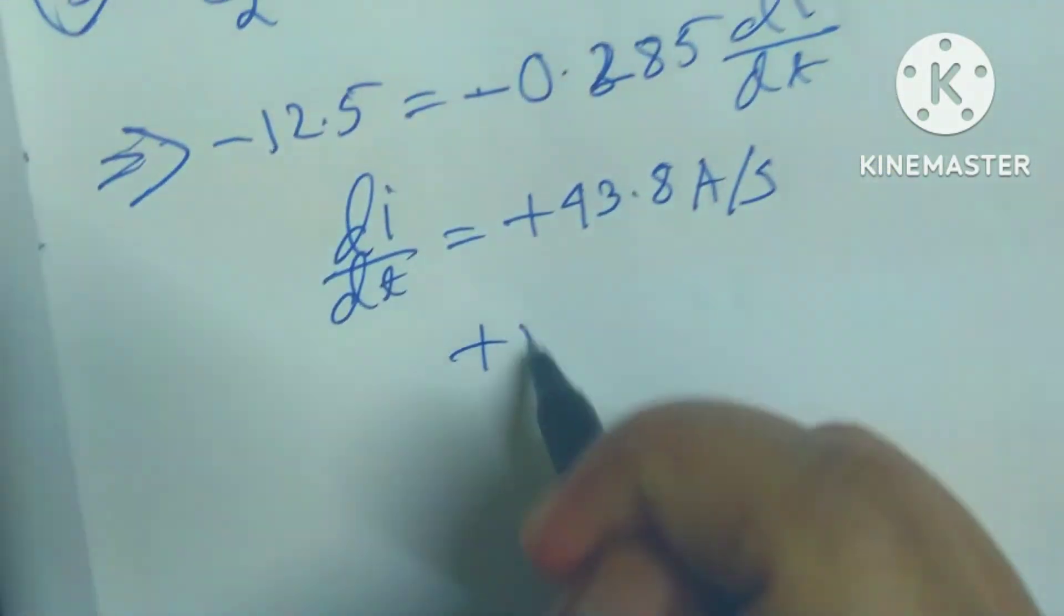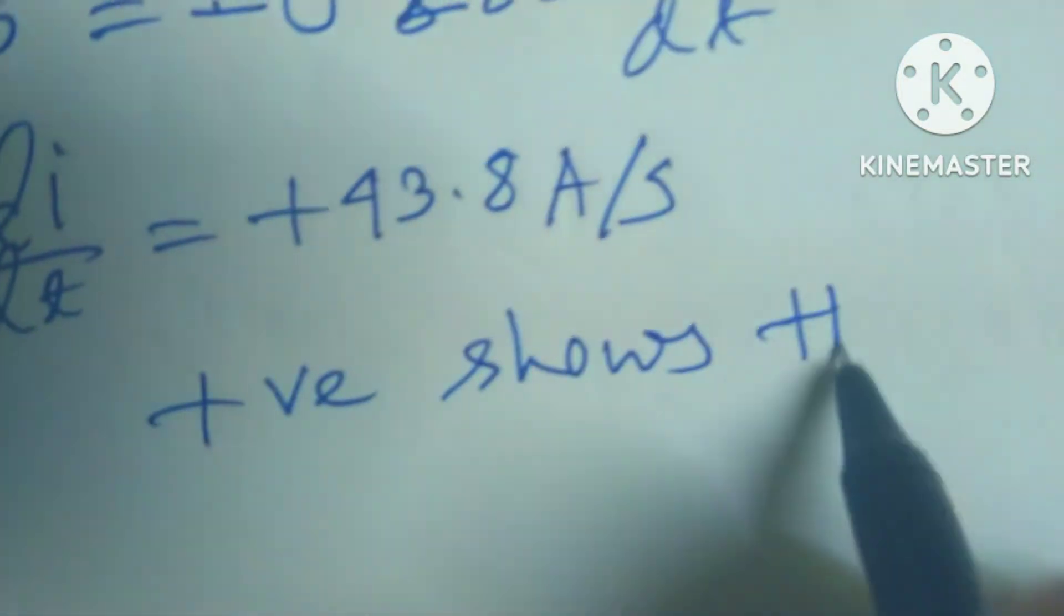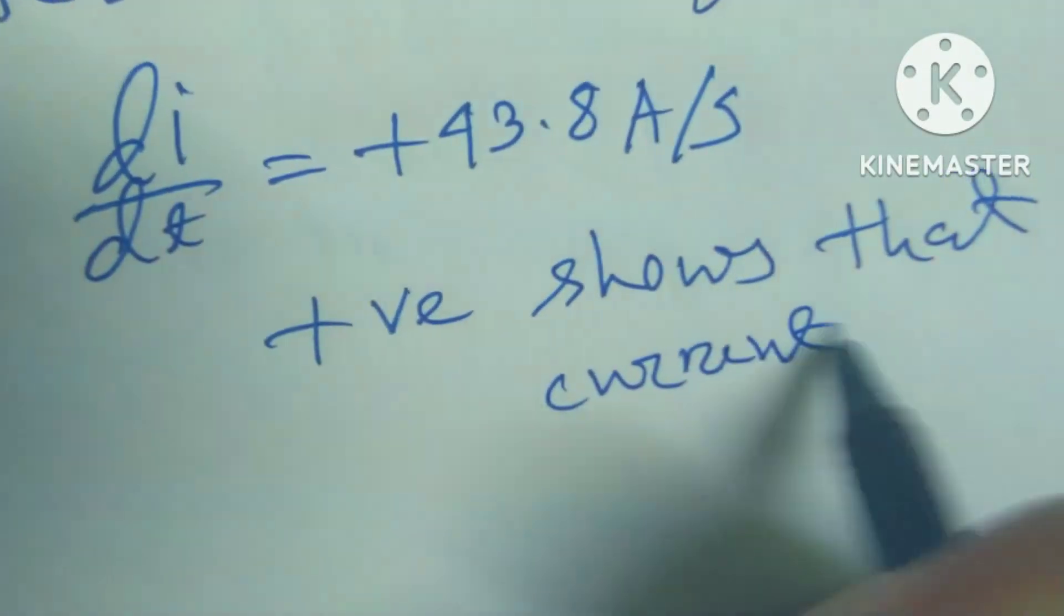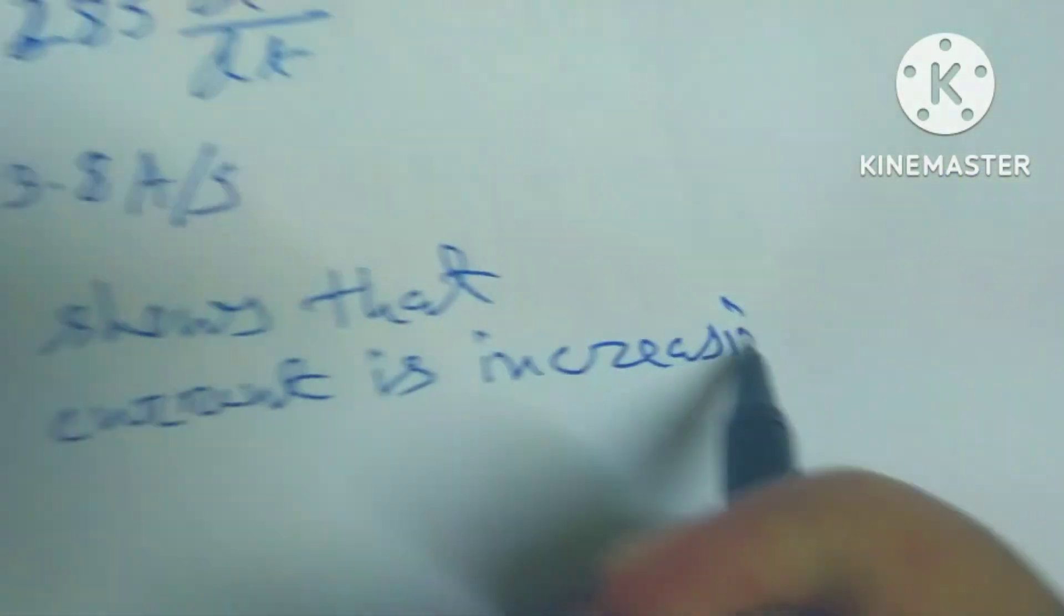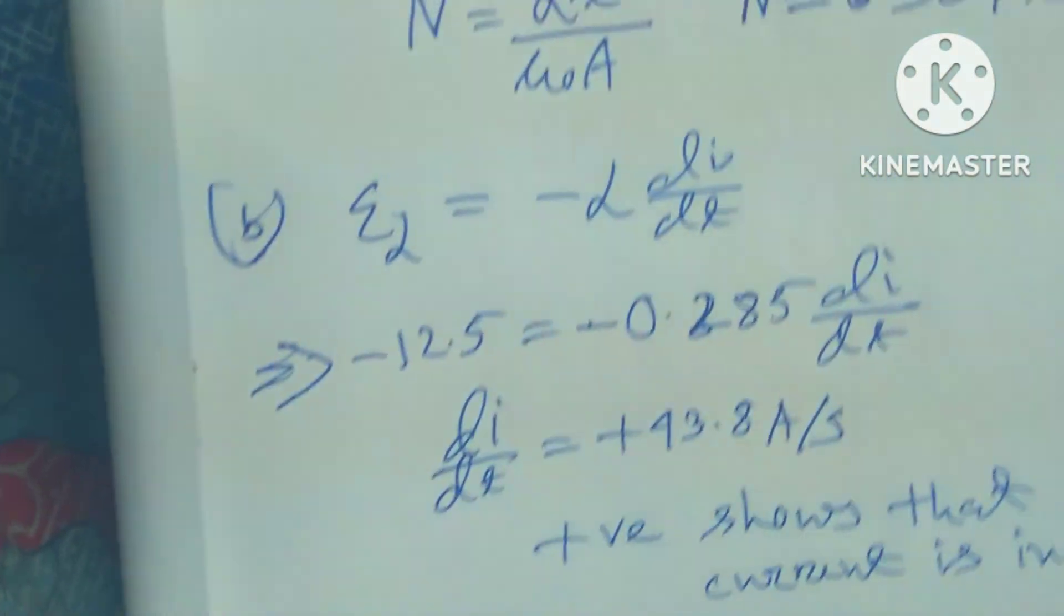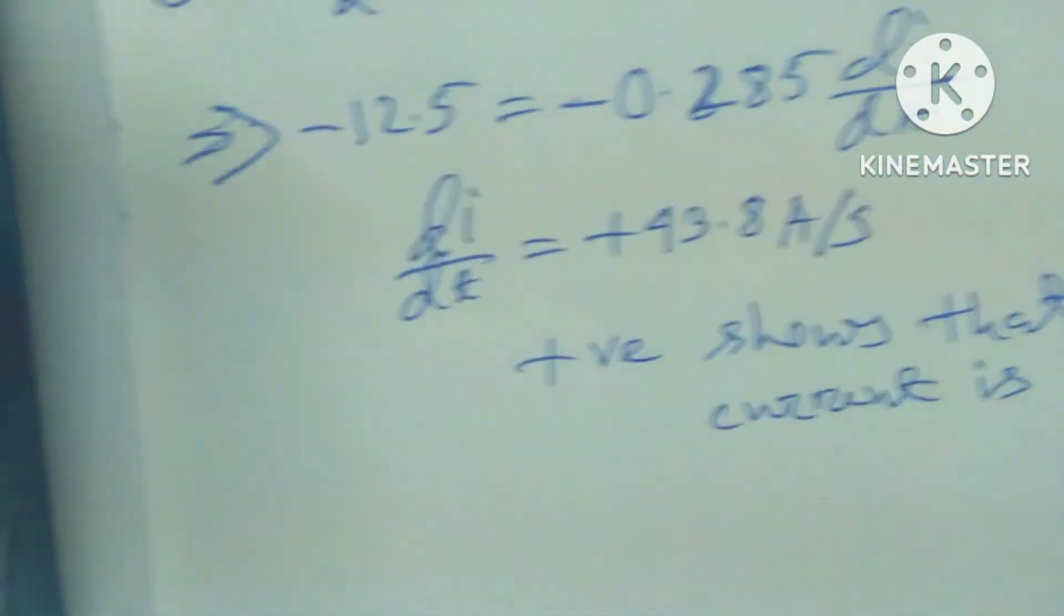The positive sign shows that the current is increasing. We can deduce that the induced EMF is in the opposite direction of the current in the circuit.